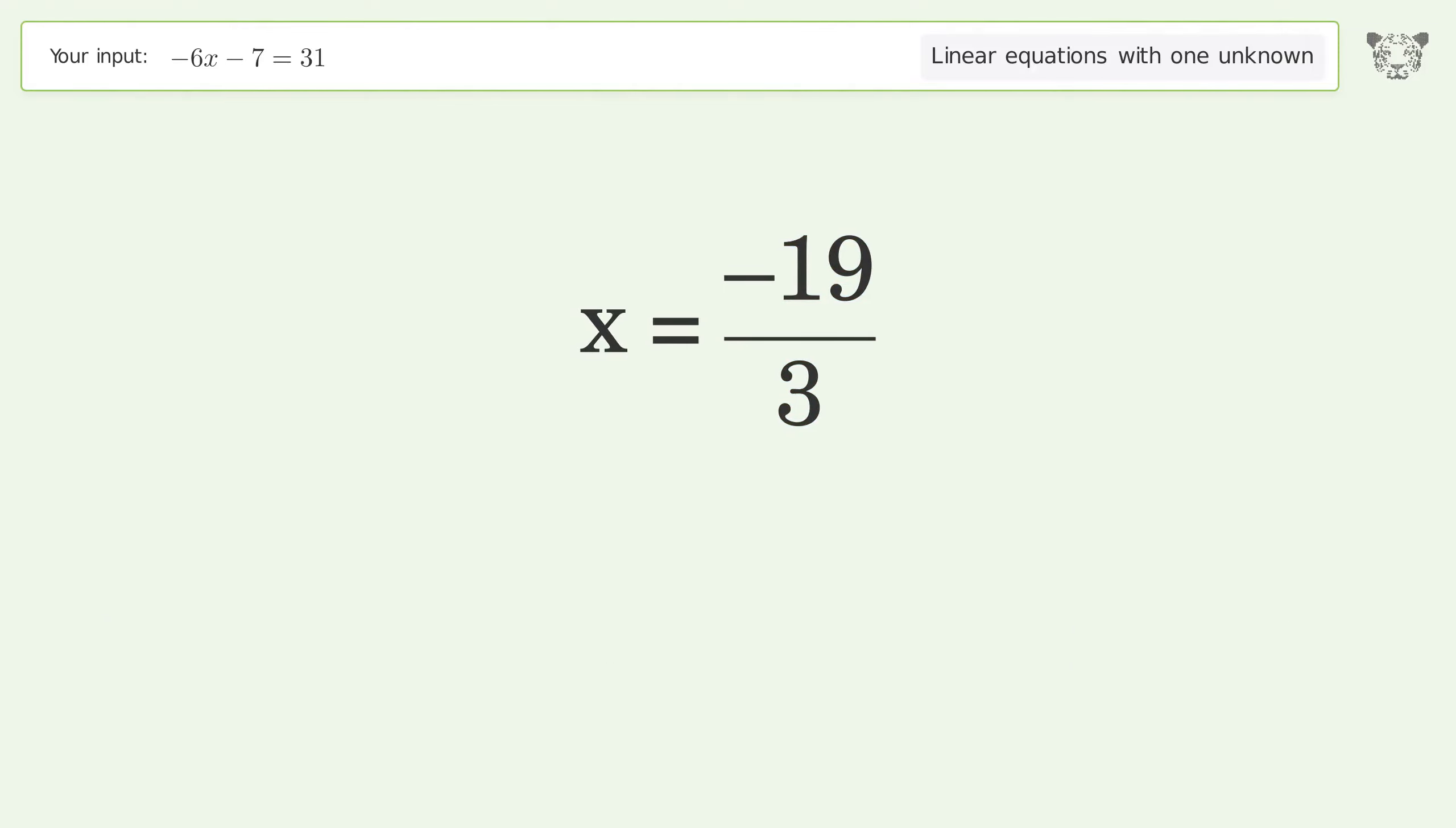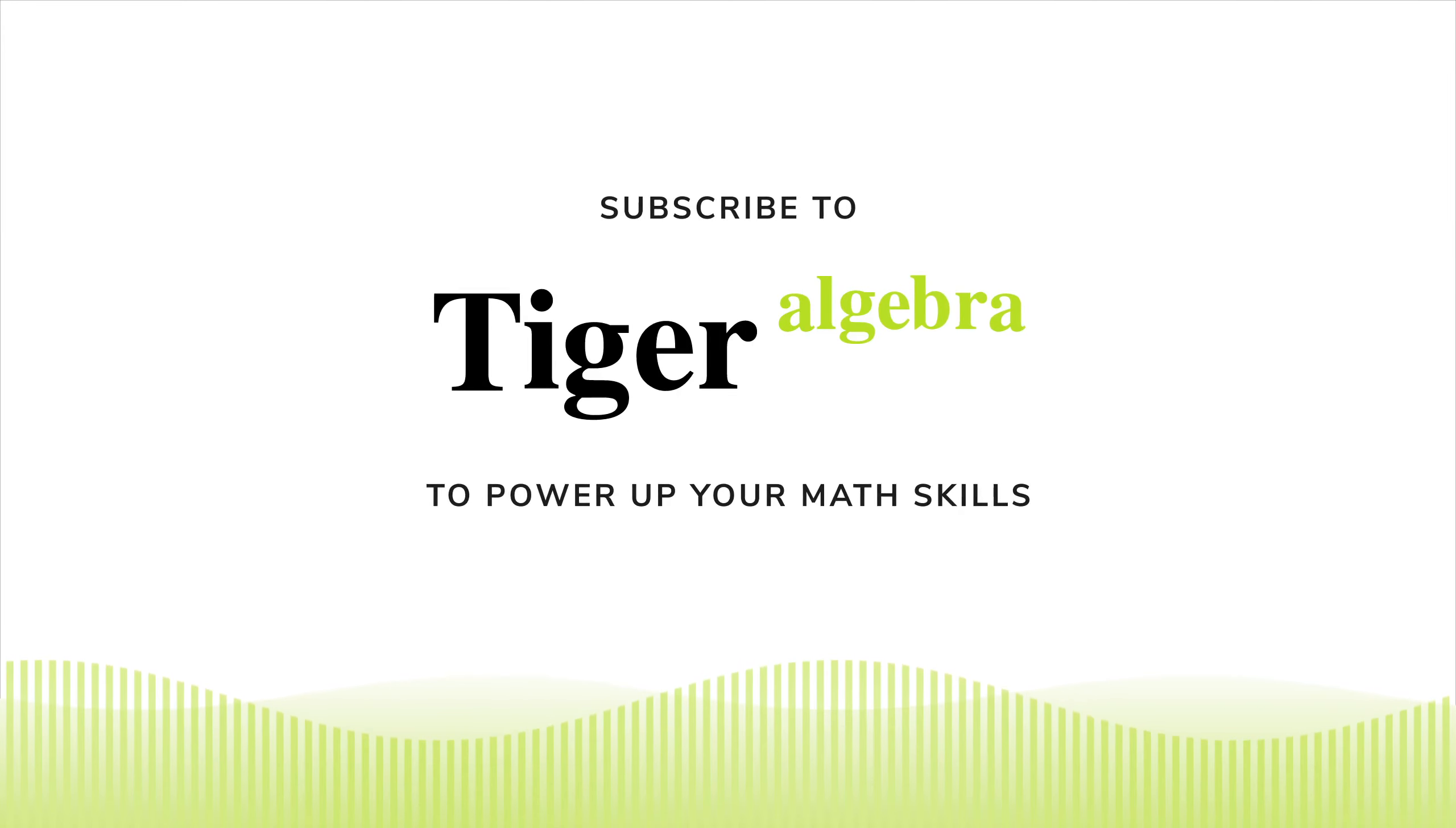And so the final result is x equals negative 19 over 3.